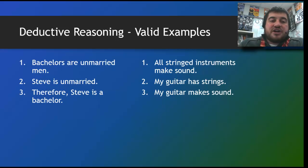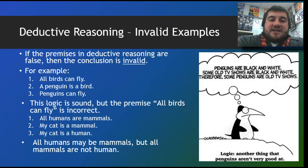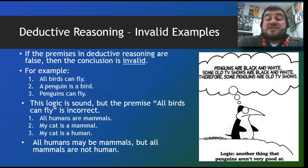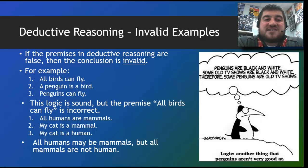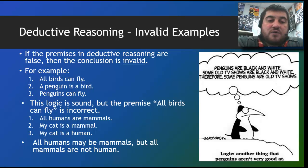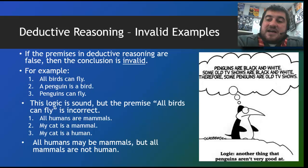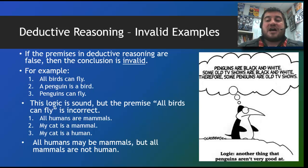Some more examples: Bachelors are unmarried men; Steve is unmarried; therefore, Steve is a bachelor. All stringed instruments make sound; my guitar has strings; therefore, my guitar makes sound. There is also invalid reasoning. If the premises are not true, then the conclusion is invalid. For example: all birds can fly — that is not true. A penguin is a bird — true. Therefore, penguins can fly is not true because one of the premises isn't true. Another example: all humans are mammals; my cat is a mammal; therefore, my cat is a human — obviously not true. All humans may be mammals, but not all mammals are human. And my favorite: penguins are black and white; old TV shows are black and white; therefore, some penguins are old TV shows. Penguins are not very good at logic.